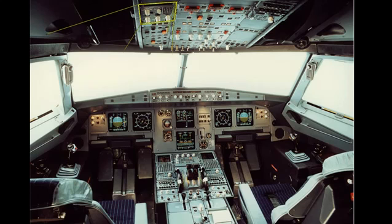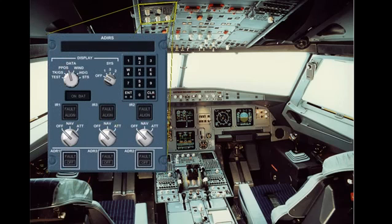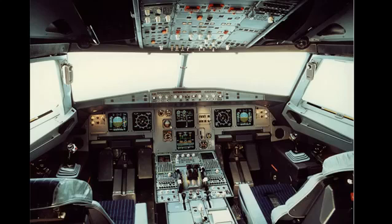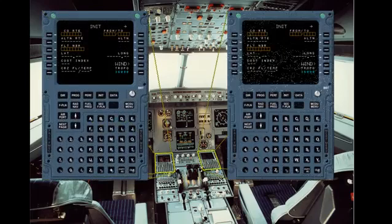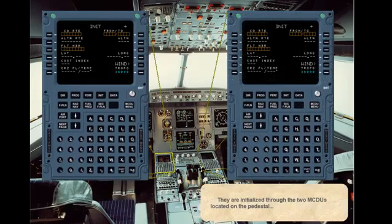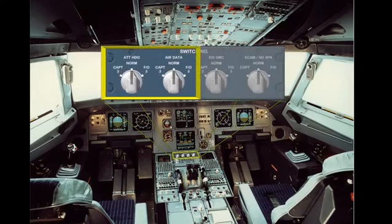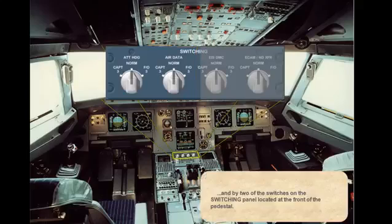The three ADRUs are controlled through the ADIRS panel located on the overhead panel. They are initialized through the two MCDUs located on the pedestal and by two of the switchers on the switching panel located at the front of the pedestal.